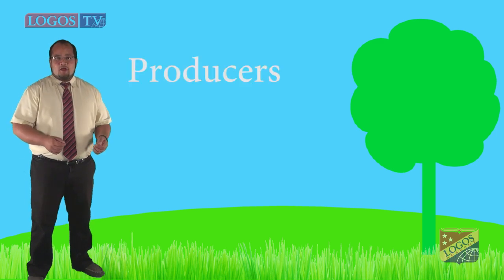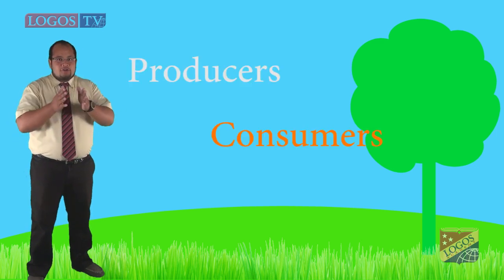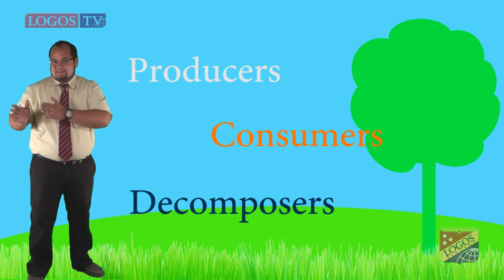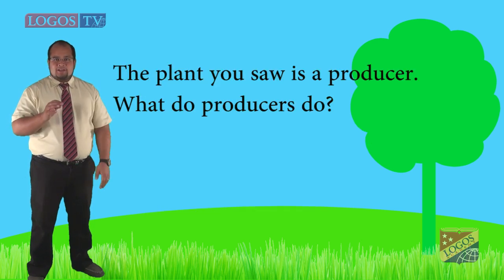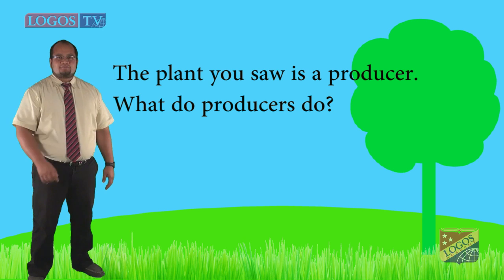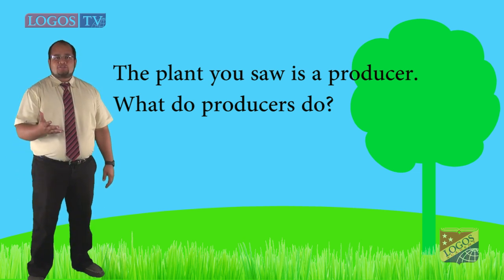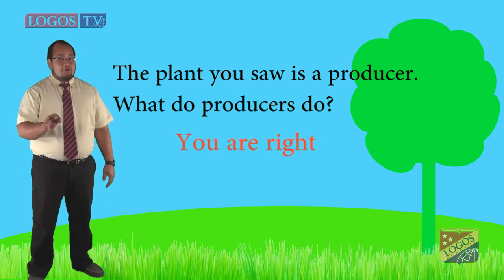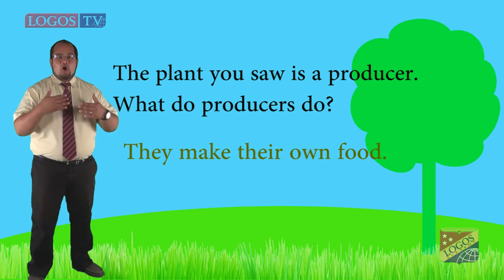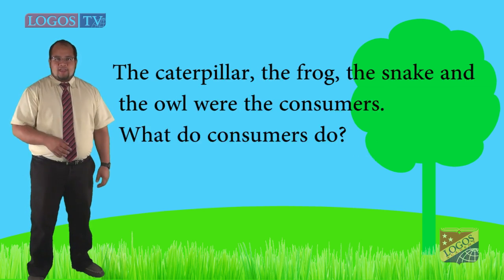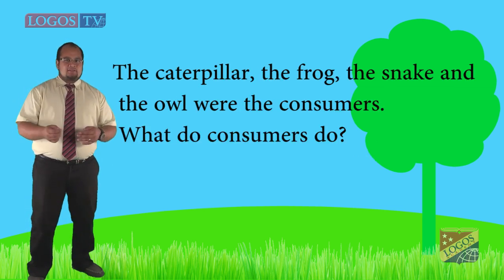That means that in a food chain, there are producers, consumers, and decomposers. The plant you saw is a producer. What do producers do? You are right, they make their own food.